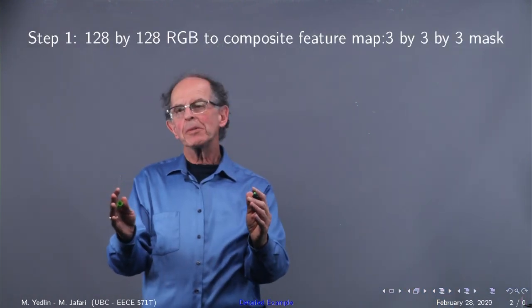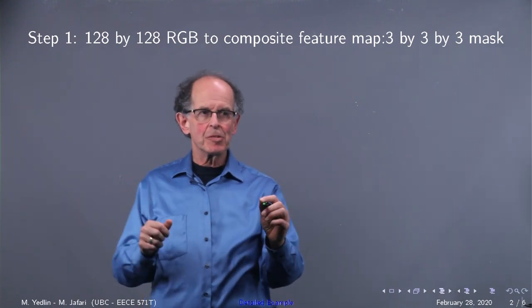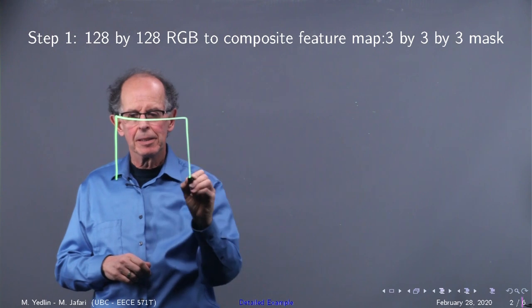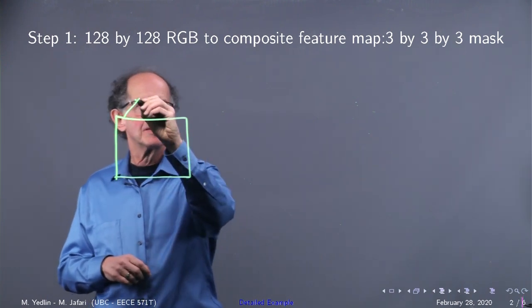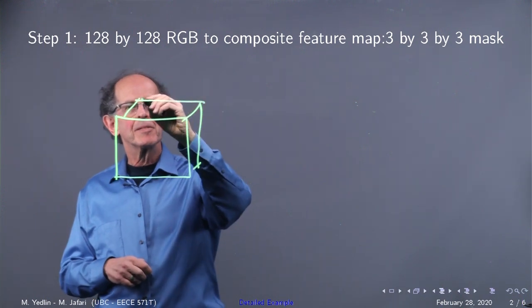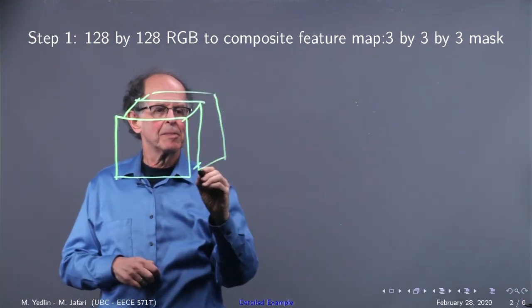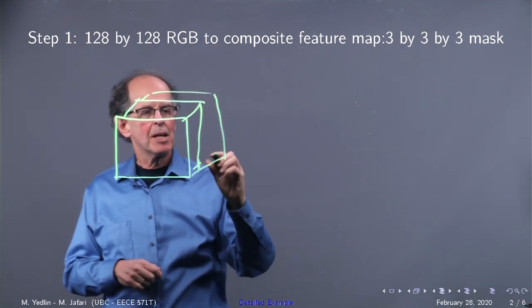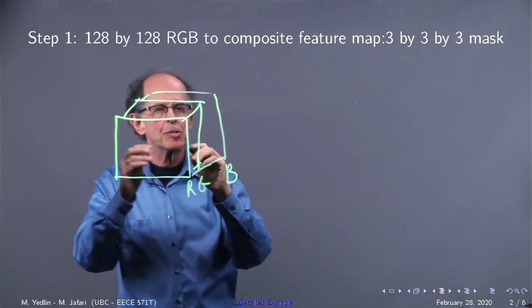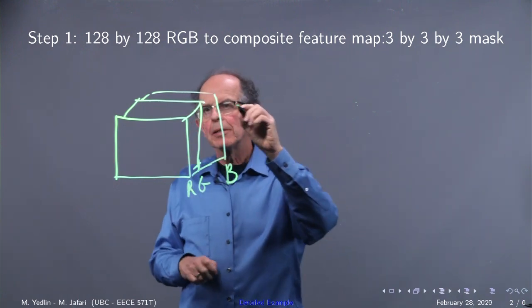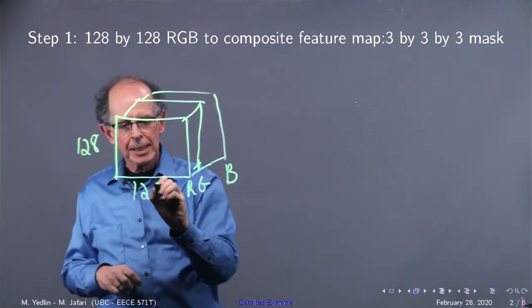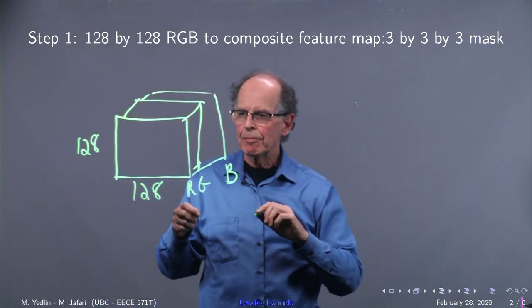Here are the steps for a detailed example. We start with an RGB array. There's R, there's G kind of behind it, and there's the third one. So we have RGB. There are three planes. The dimensions are 128 by 128 by 3.